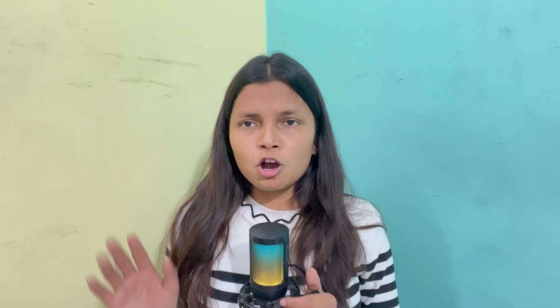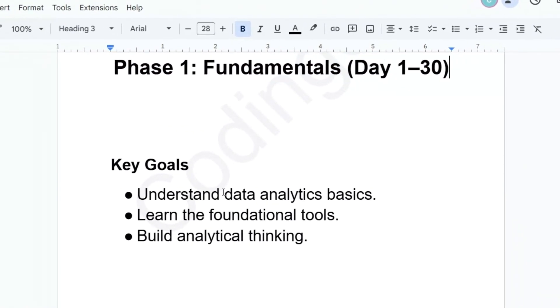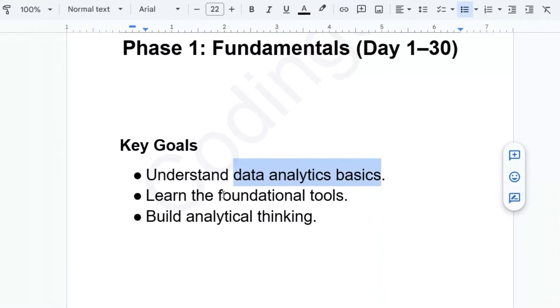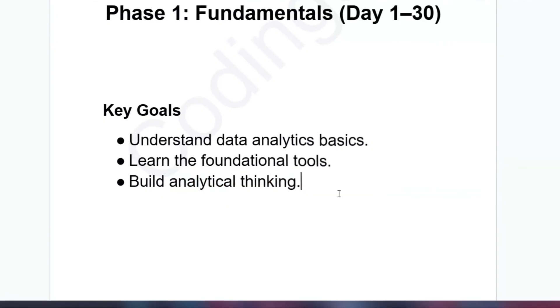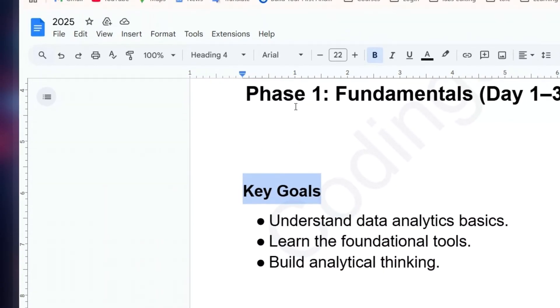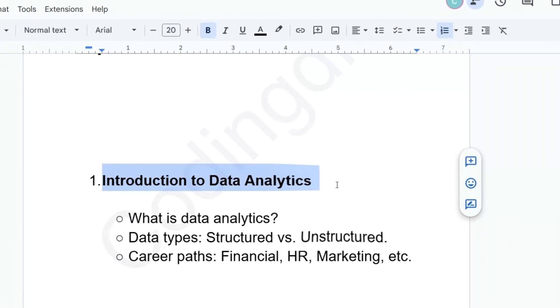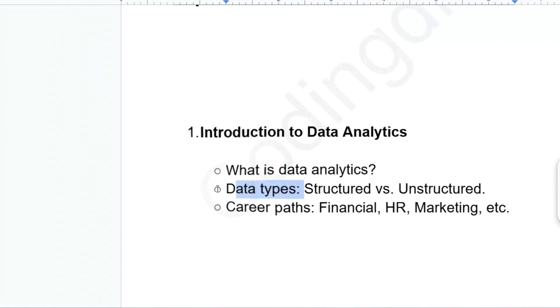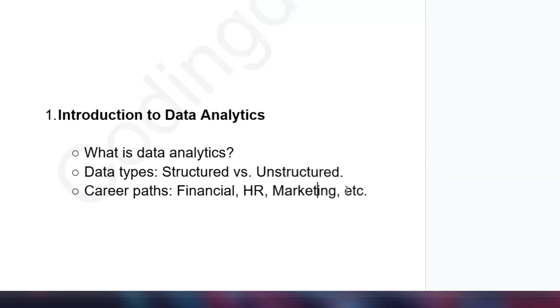Now let's talk about the 120-day roadmap. Phase one is about foundational knowledge. Your targets are: achieve data analysis basics, learn a foundational tool, and develop analytical thinking — because we are solving business problems. Focus only on these three things within 30 days. You have to cover topics like what data analysis is, types of data — structured and unstructured — how to deal with unstructured data, and the key steps involved.